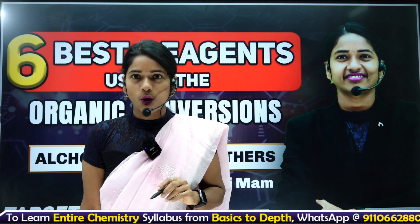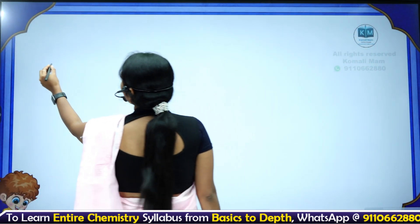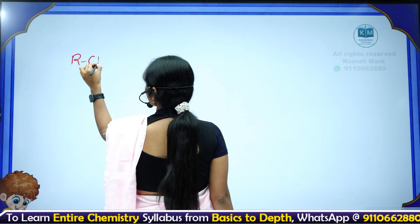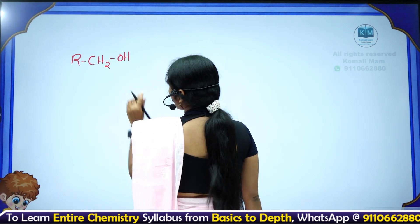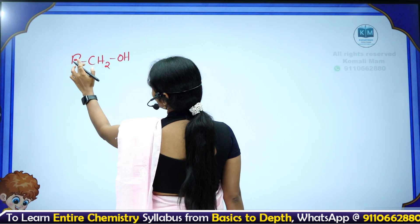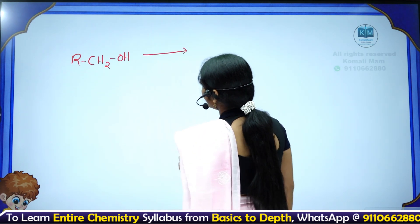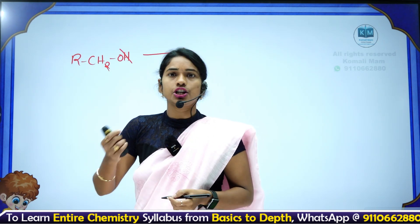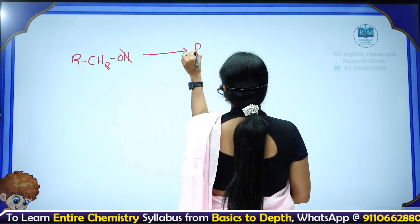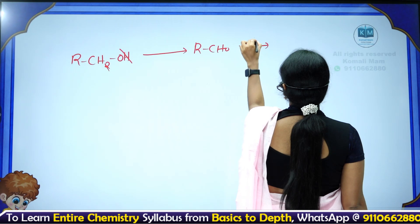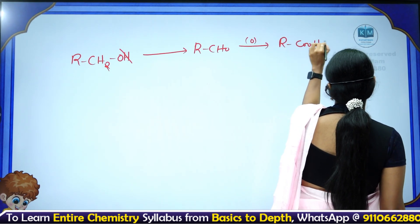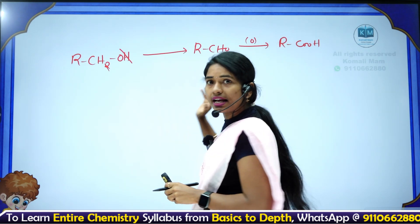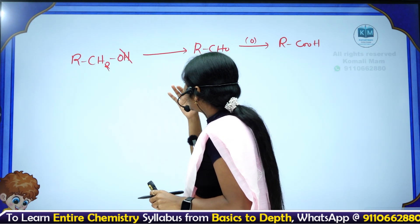This is related to primary and secondary alcohols. Let's take primary alcohol: RCH₂OH — OH connected to a carbon that is linked to only one other group. If you do oxidation of this primary alcohol — oxidation means removal of hydrogens or addition of oxygen — removing two hydrogens gives you an aldehyde. Oxidizing that aldehyde again gives you a carboxylic acid. So the oxidation series is: alcohol → aldehyde → carboxylic acid.